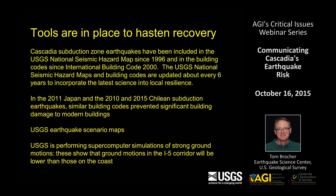The Cascadia Subduction Zone earthquake has been included in the USGS National Seismic Hazard maps since 1996 and in building codes since about 2000. Both the hazard maps and building codes are updated about every six years to incorporate the latest science. In both the recent Japanese and Chilean earthquakes, similar building codes have been very effective in preventing significant building damage.